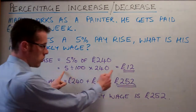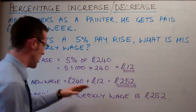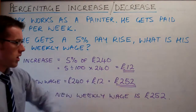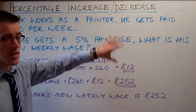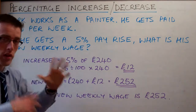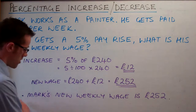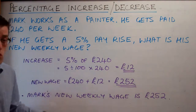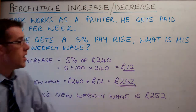This is the method we'll keep all the way through these videos. The new wage is £240 plus the increase, giving £252. If you're asked in a sentence and it's in context, you need to show you understand that context. So your answer is: Mark's new weekly wage is £252. That shows you've understood and answered the question properly. So that's percentage increase and decrease.